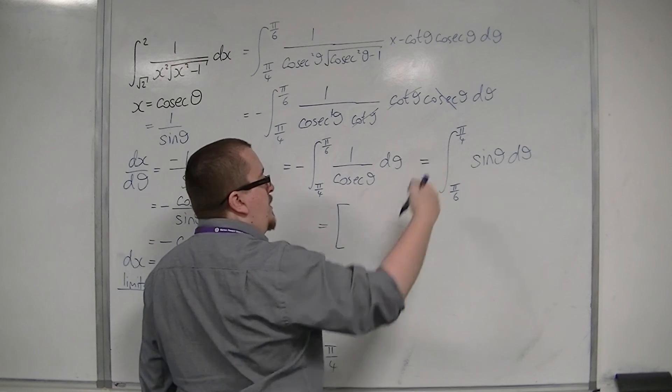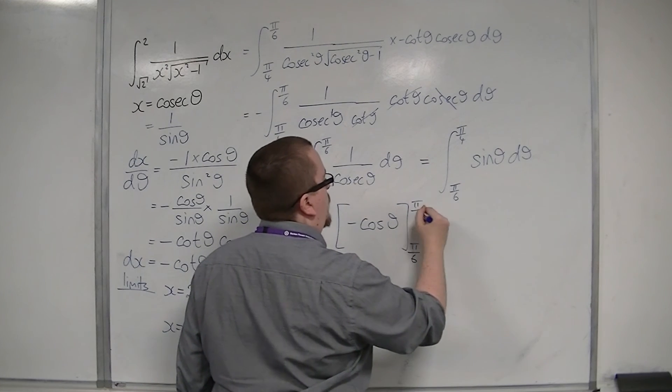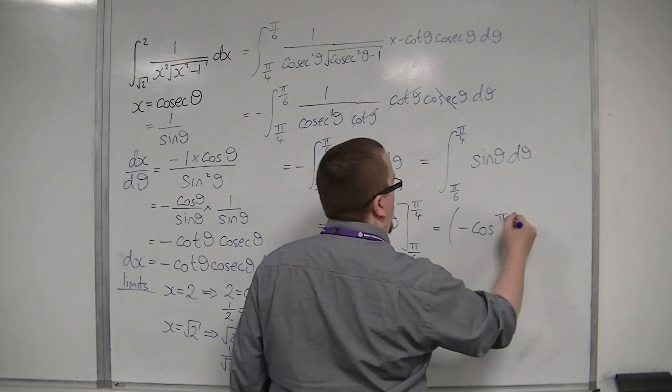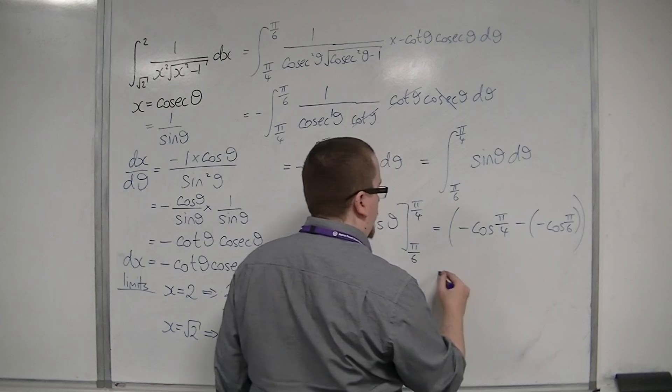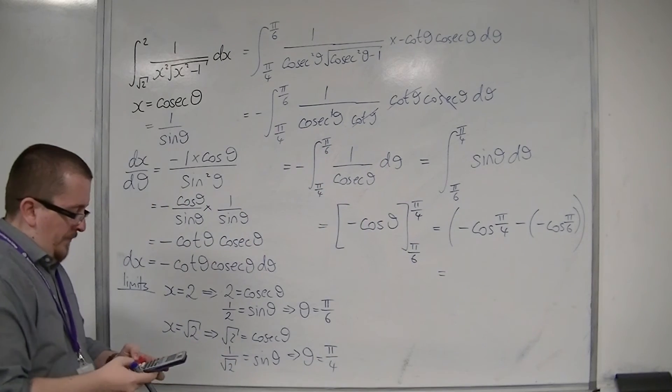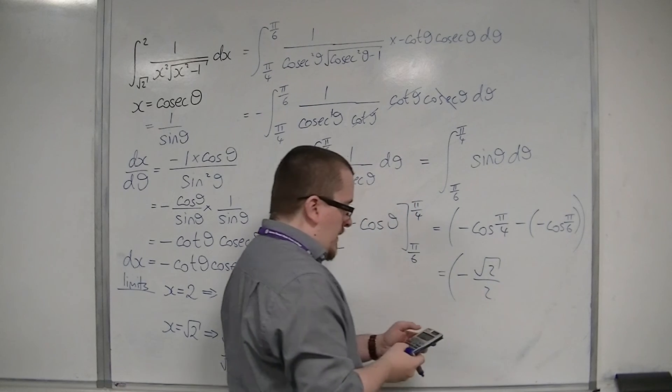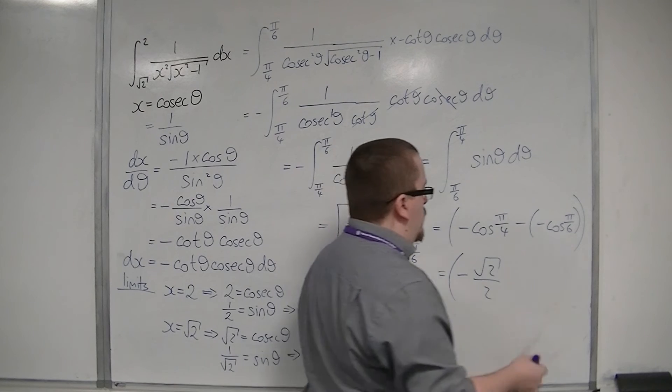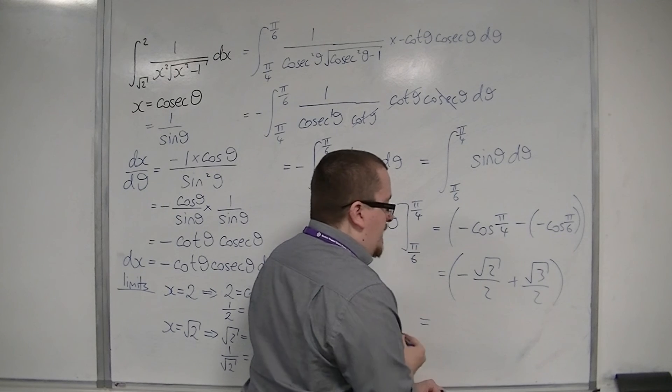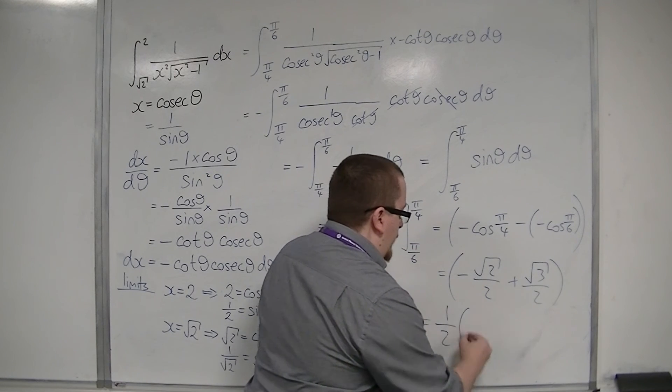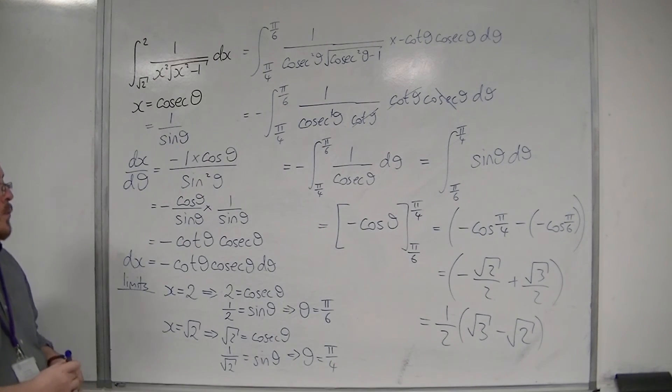So I'm evaluating sine theta integrates to minus cosine theta between pi over 6 and pi over 4. This is minus cos of pi over 4 take away minus cos of pi over 6. Cos of pi over 4 is root 2 over 2, so minus root 2 over 2. Then you've got cos of pi over 6 is root 3 over 2, so plus root 3 over 2. And so we can write that as 1 half root 3 minus root 2. That would be my final answer.